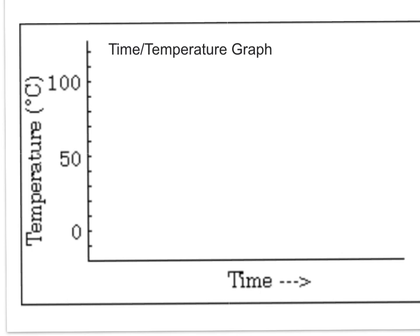Today we're going to be talking about a time-temperature graph for water, or H2O. And if you look here, you can see that we have a graph. Along the y-axis is temperature, so it starts at negative 10 and goes up — it's increasing in temperature. On the x-axis we have time. And almost every time you see time on the x-axis, you're going to be talking about some sort of line graph, because time is constantly changing.